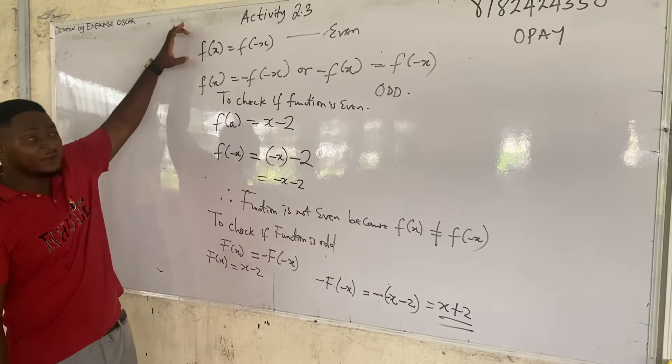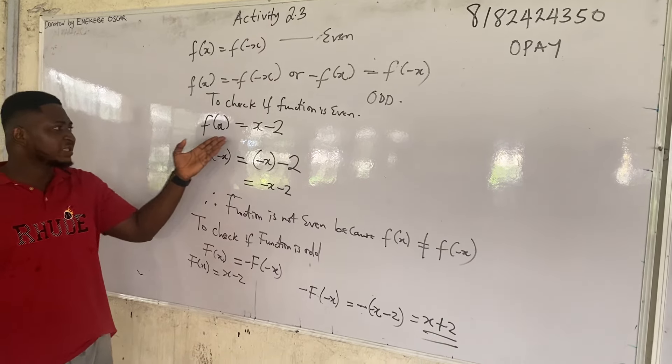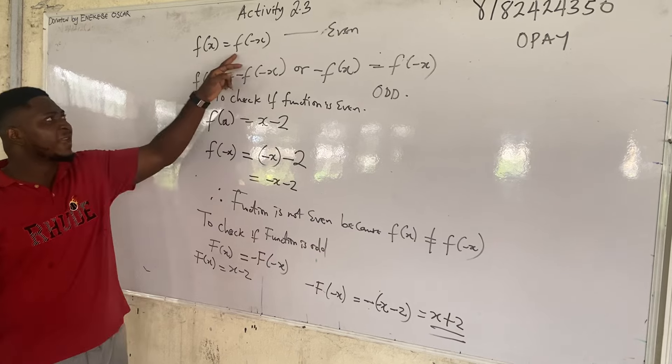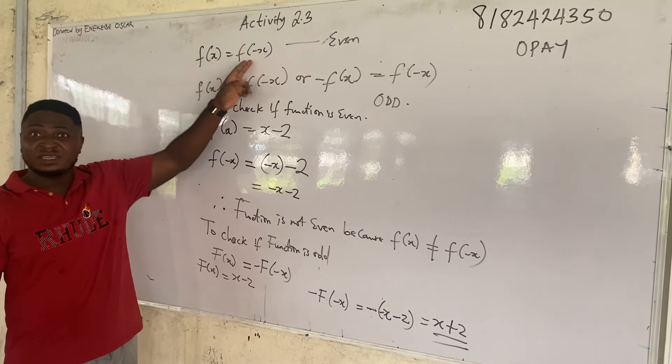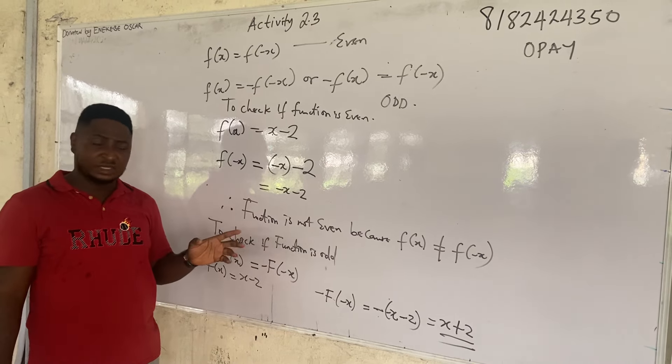Don't forget that for a function to be even, f of x must be equal to f of minus x. Now look, f of x is x minus 2. Let us go and find f of minus x and if they are the same then the function is even. If they are different, then the function is not even.